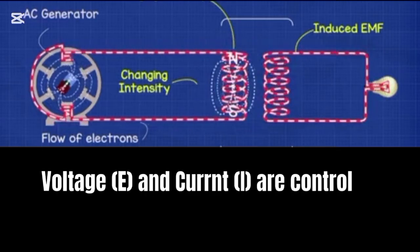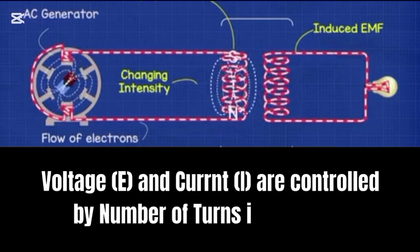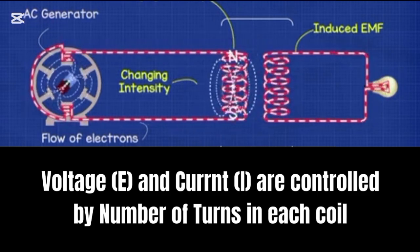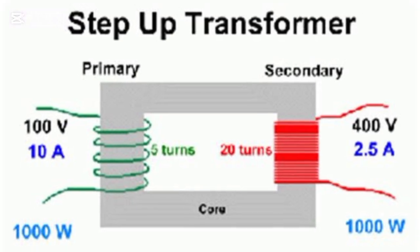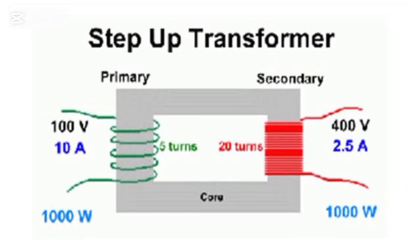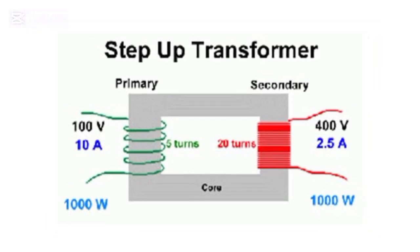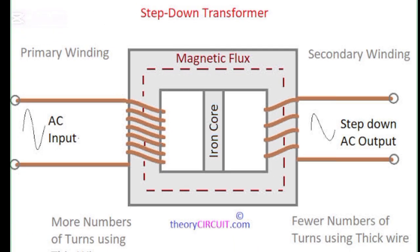The voltage and current in a transformer are controlled by the number of turns of wire in each coil. If the secondary coil has more turns than the primary, it increases voltage. That's a step-up transformer. If it has fewer, it reduces voltage. A step-down transformer.